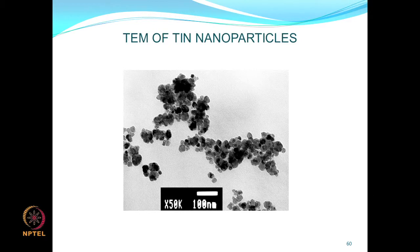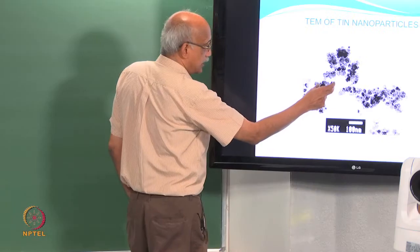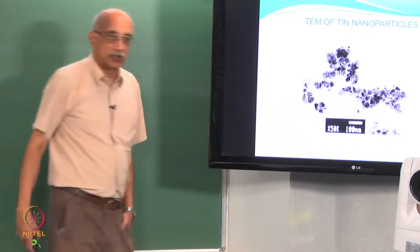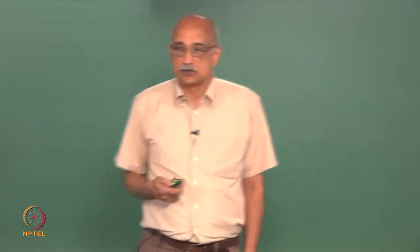TEM images of titanium nitride nanoparticles produced by high energy ball milling show this clustering mechanism. Particles are very difficult to observe individually. These clusters range from about 100 nanometers to 500 to 800 nanometer clusters. However, these are loosely bonded clusters that are very easy to break apart with minimal energy expenditure, so it is not necessarily a big negative.